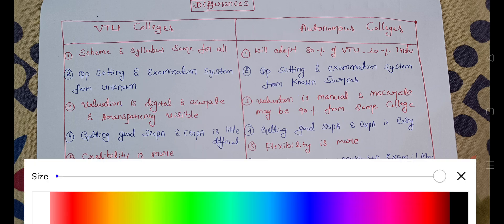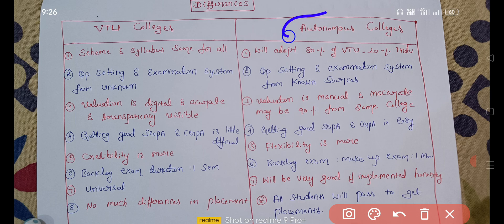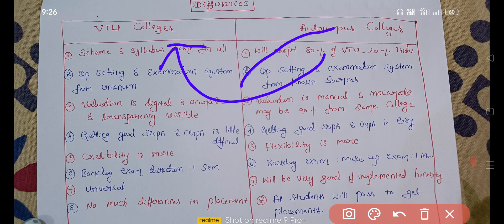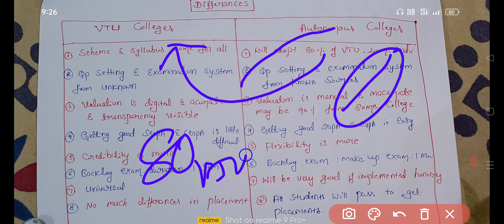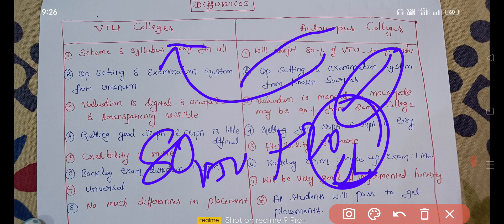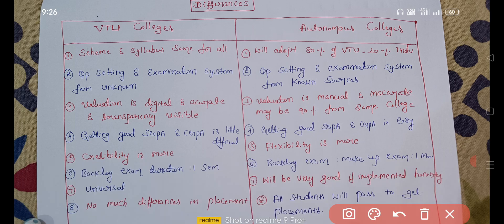For autonomous colleges, it is different. Autonomous colleges adopt 80% of VTU's syllabus and are allowed to change 20% of it. So the first point difference in scheme and syllabus is that VTU colleges all follow the same syllabus, while autonomous colleges can modify up to 20%.